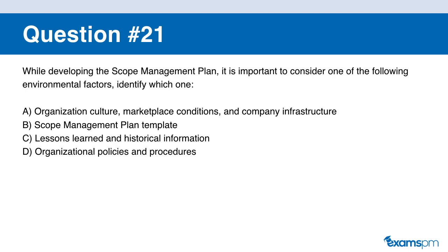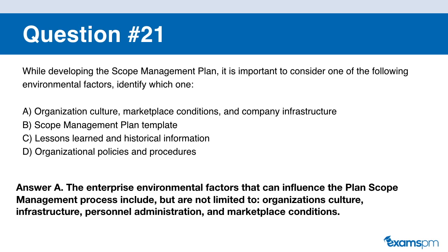Question number twenty-one. While developing the scope management plan, it is important to consider one of the following environmental factors — identify which one. A: organizational culture, marketplace conditions, and company infrastructure. B: scope management plan template. C: lessons learned and historical information. D: organizational policies and procedures. If you said A, you are correct. Enterprise environmental factors that influence the plan scope management process include the organization's culture, infrastructure, personnel administration, and marketplace conditions.